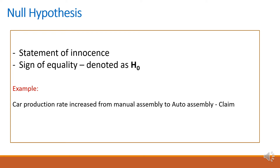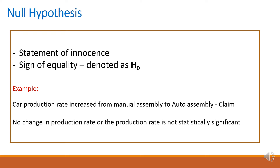There is a null hypothesis here: no change in production rate, or production rate is not statistically significant. There is no change in production rate — the null hypothesis is just sample variation. This is the null hypothesis, with a sign of equality, meaning there is no change. So if you look at the null hypothesis, it is zero.